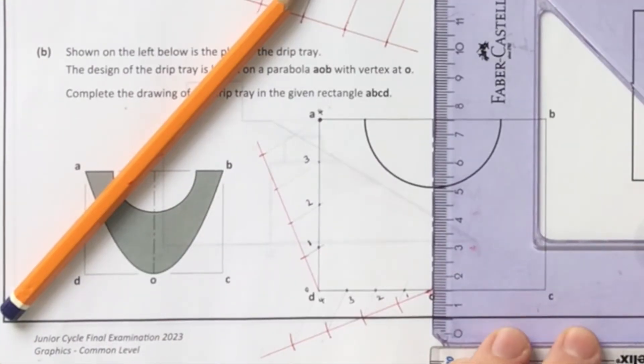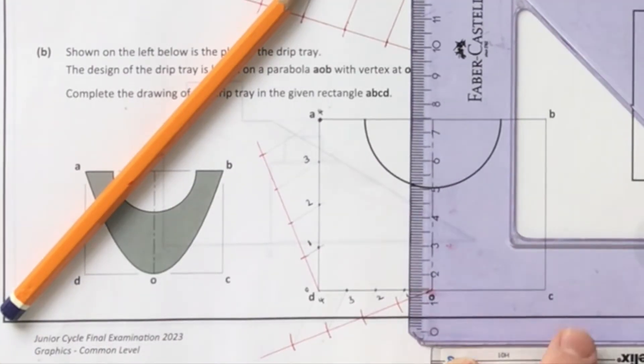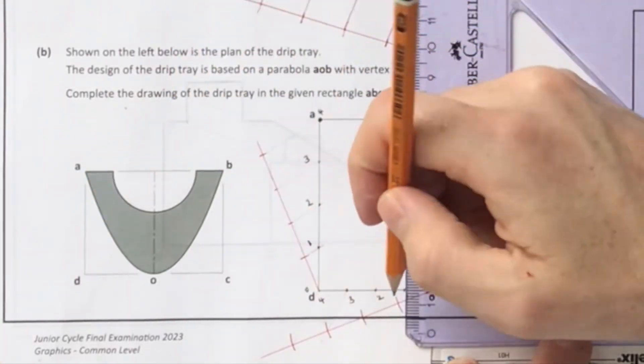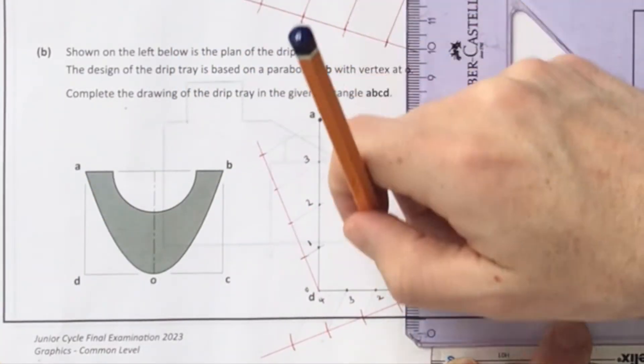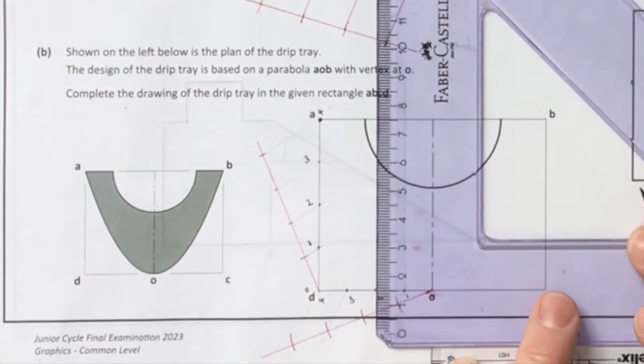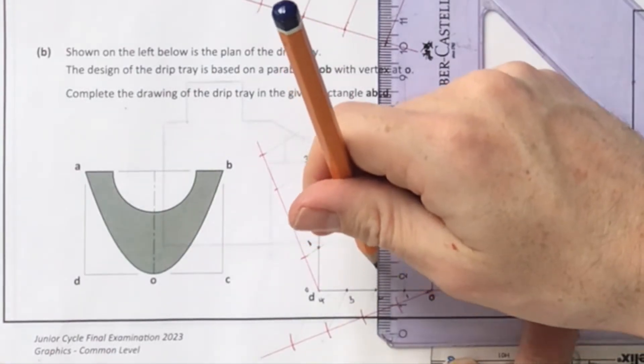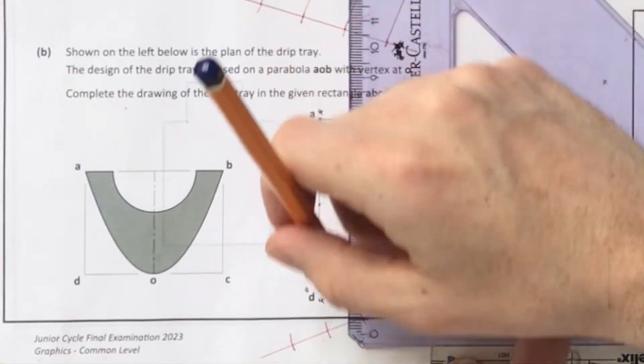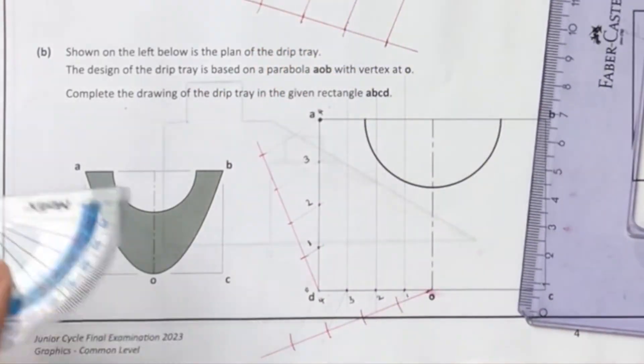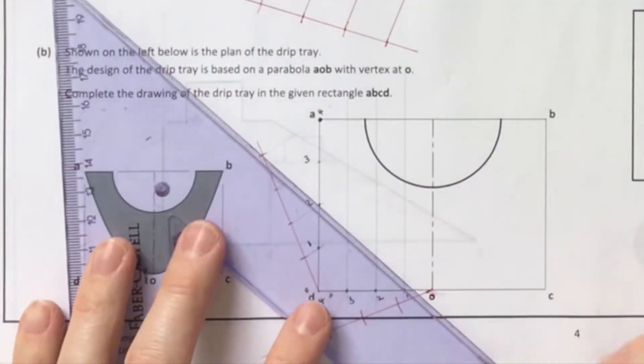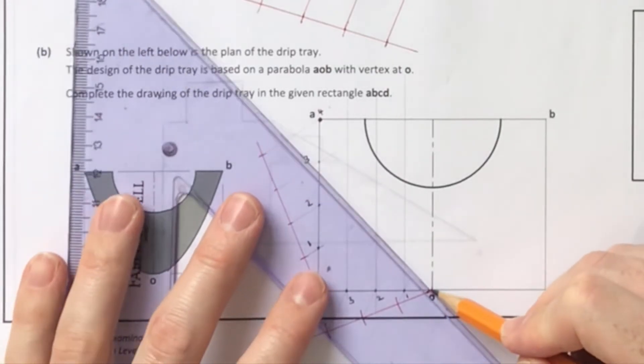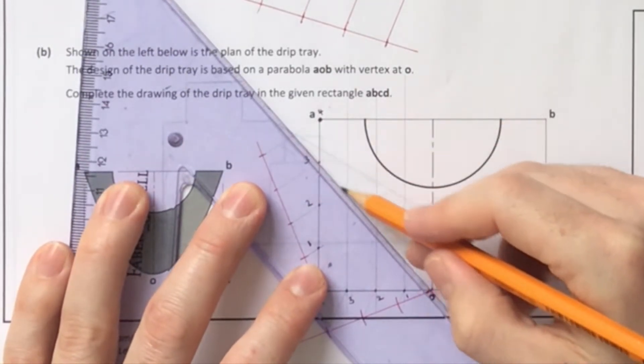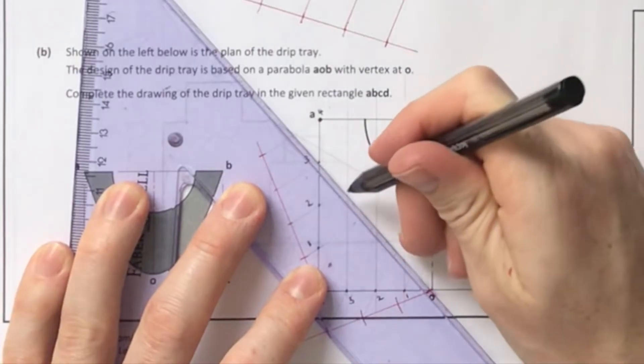The next thing we need to do is put in vertical lines from each one of these divisions we've just created. A vertical line going in from 1, a vertical line from 2, and a vertical line from 3. I'm using my sliding set squares because the sheet wasn't on perfectly horizontally. That's 3 of my division lines going in.